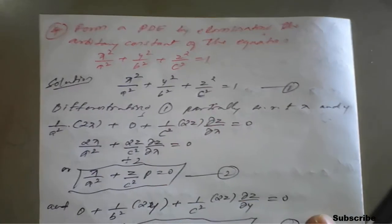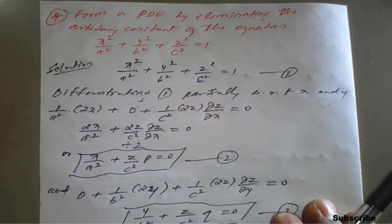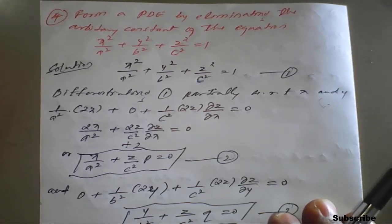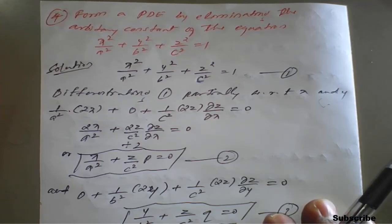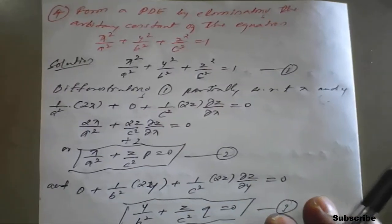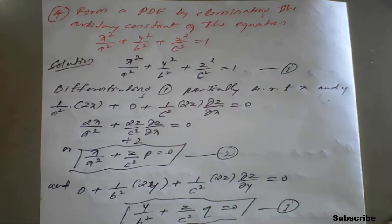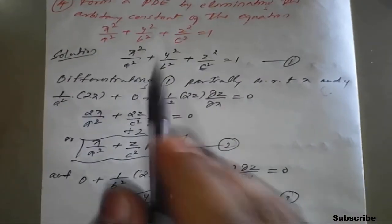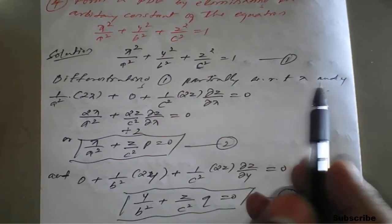This is a slightly different kind of example. As seen in the introduction, when we have two independent variables and two arbitrary constants, we differentiate with respect to those two variables. But if there are more than two arbitrary constants, we must also take higher-order partial derivatives. So we differentiate equation 1 with respect to x and y partially.